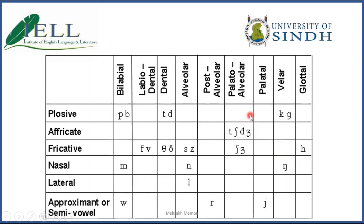Now we can see this table as a whole. Earlier we skipped this part and talked about place of articulation. All consonants are distributed according to place of articulation as well as manner of articulation. Plosives are P, B, T, D, K, G, but their place of articulation is different. For example, P is a bilabial plosive and T is a dental plosive. Similarly, 's' is an alveolar fricative. We distinguish all consonants according to their place of articulation and manner of articulation.